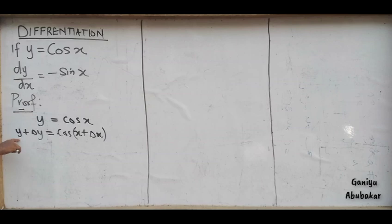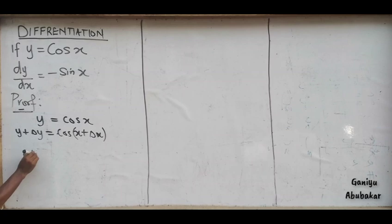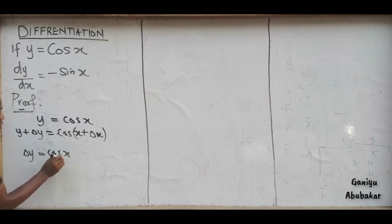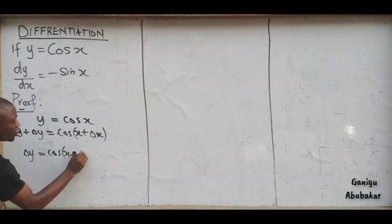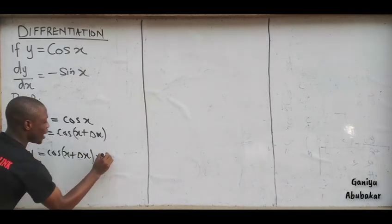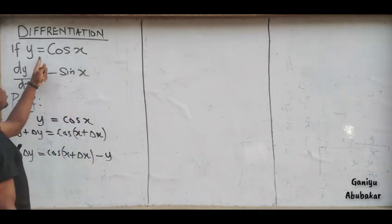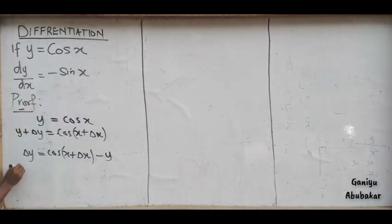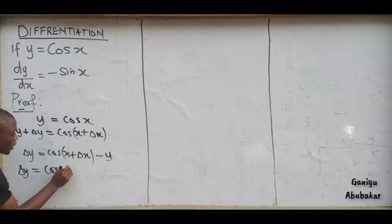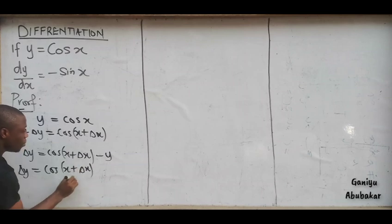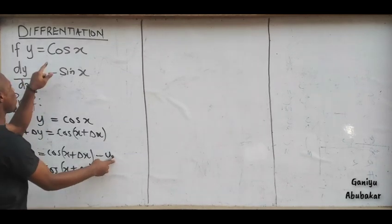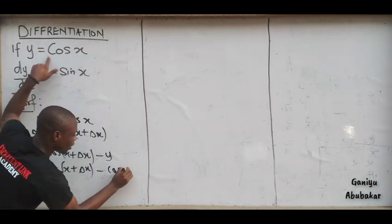At this point, take y to the other side and we'll have that Δy is equal to cos(x + Δx) minus y. But we just said y from the question was cos x. So Δy is equal to cos(x + Δx) minus cos x.